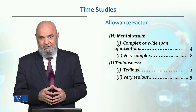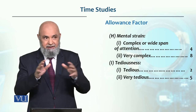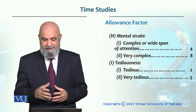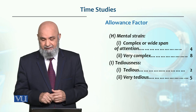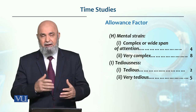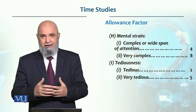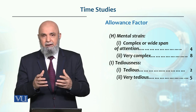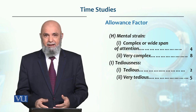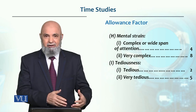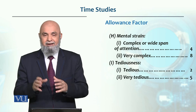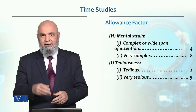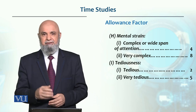Mental strain किस किस्म का है — complex और wide span attention बहुत ज्यादा है तो 4%, very complex है तो 8% तक जा सकता है। Tedious काम है तो 2%, बहुत ज्यादा tedious है तो 5%। ये सारे allowances determine किये हुए हैं। एक ही बंदा इनमें से एक-आध काम करेगा — कोई mental strain में है, कोई heavy load उठा रहा है — तो उसका अपना allowance होगा। Fixed allowance और variable allowances को sum करके हम total allowance उस job के लिए determine करेंगे।